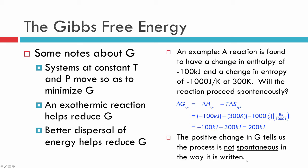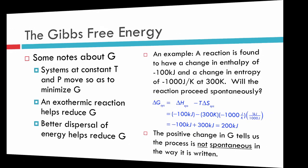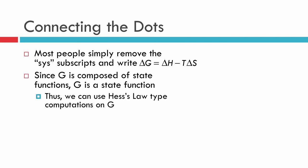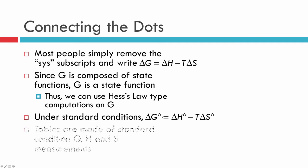Let's connect the dots a little bit. Most people remove the 'sys' subscripts and we just write delta G equals delta H minus T delta S. Not a big deal, right? Since G is composed of state functions, it is also a state function. That means we can do calculations just like you'd see for Hess's law type computations—we already know how to do those, so that's excellent. And under standard conditions, there might be a relationship between all the standard versions of these. Remember, standard conditions—we'll talk about what those are in a second—but whenever you see the word standard, you need to add in the little naught. That's the signal that, hey, this is not just any old conditions, it's standard conditions. There are tables of these that you can have in the back of your book.